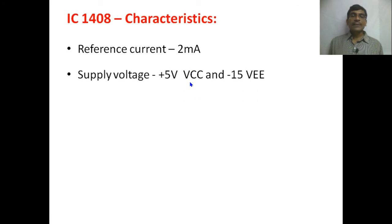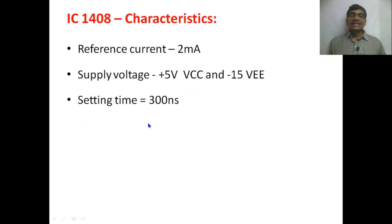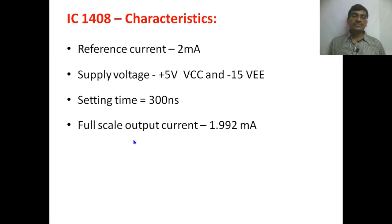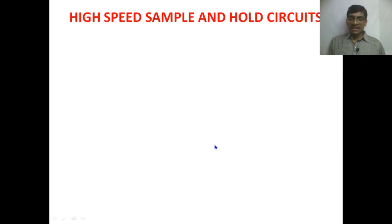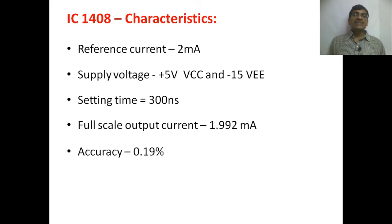The characteristics of IC 1408: the reference current is 2 milliamperes, supply voltage is +5V (VCC) and −15V (VEE). The settling time is 300 nanoseconds — within 300 nanoseconds the output becomes stable. The full-scale output current maximum is 1.992 milliamperes and the accuracy of IC 1408 is 0.19%. This is the monolithic IC 1408, an 8-bit R2R ladder DAC.